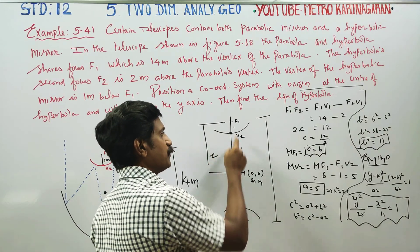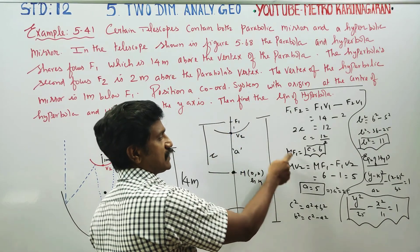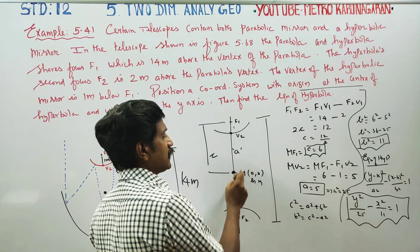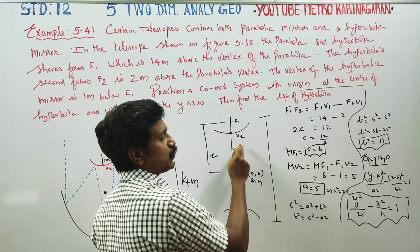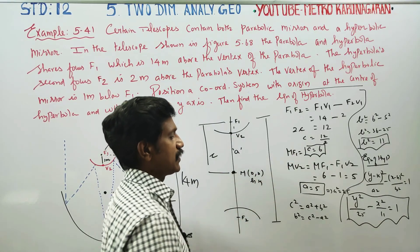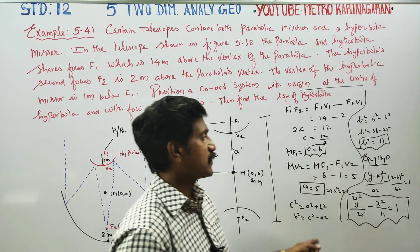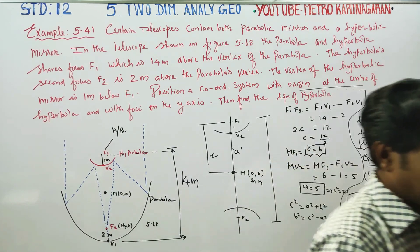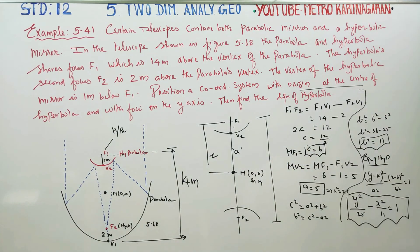To summarize: c equals MF1, and a equals MV2, from which you can get the answer. Thank you.